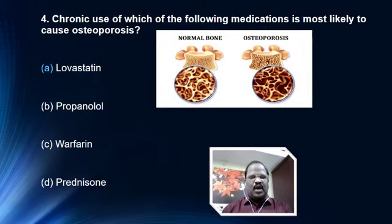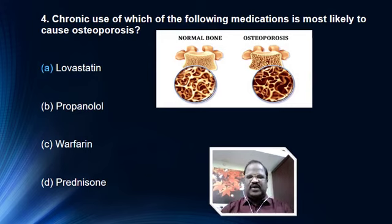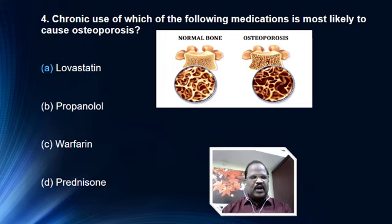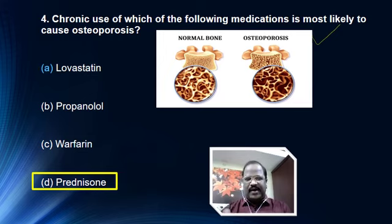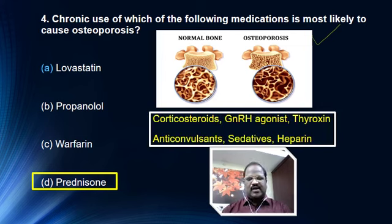Next question: chronic use of which of the following medications is most likely to cause osteoporosis? Options are lovastatin, propranolol, warfarin, and prednisolone. The right answer is prednisolone. There are many drugs that may cause risk of osteoporosis, including corticosteroids, GnRH agonists, thyroxine, anticonvulsants, some sedatives, and heparin.